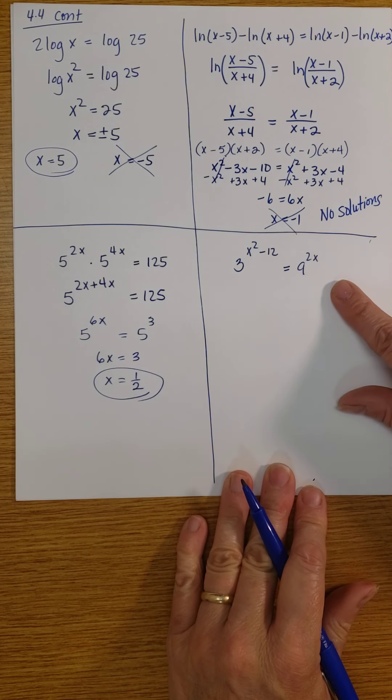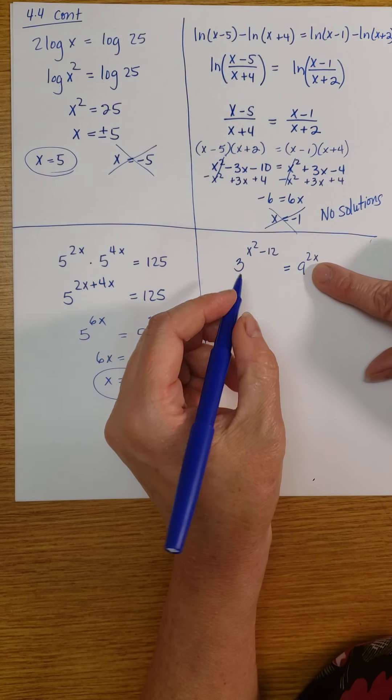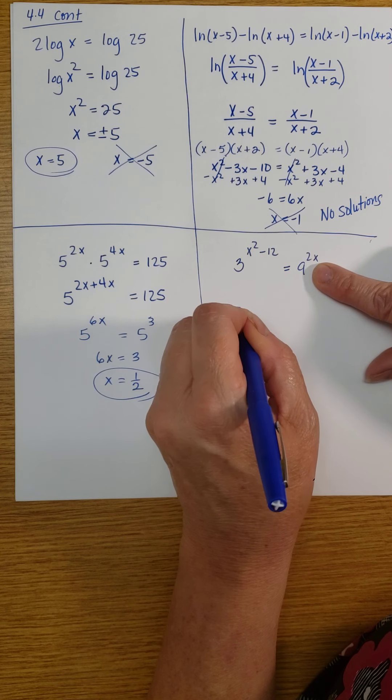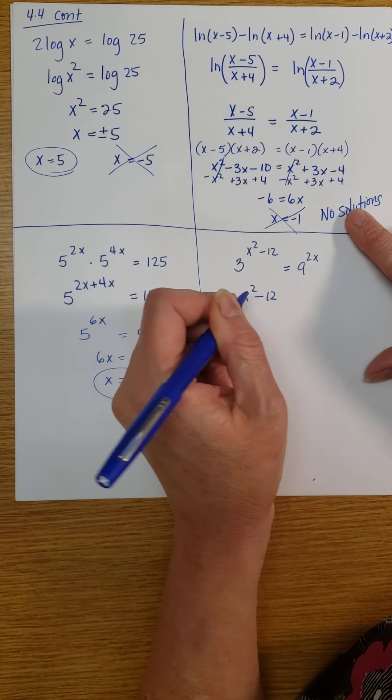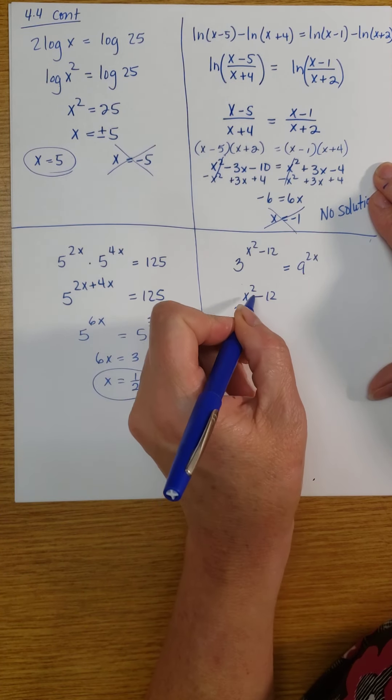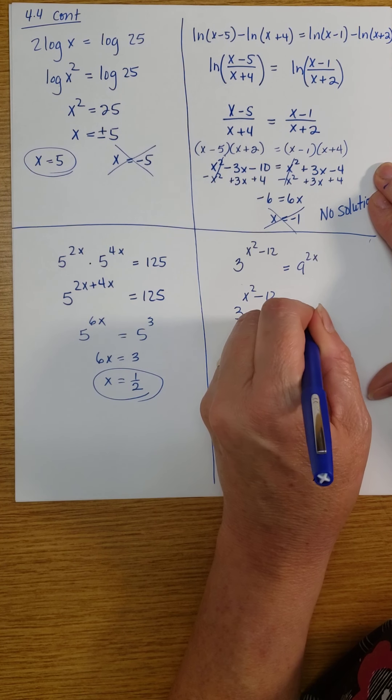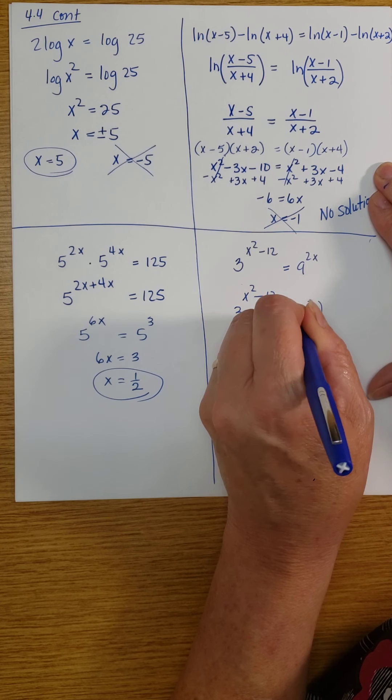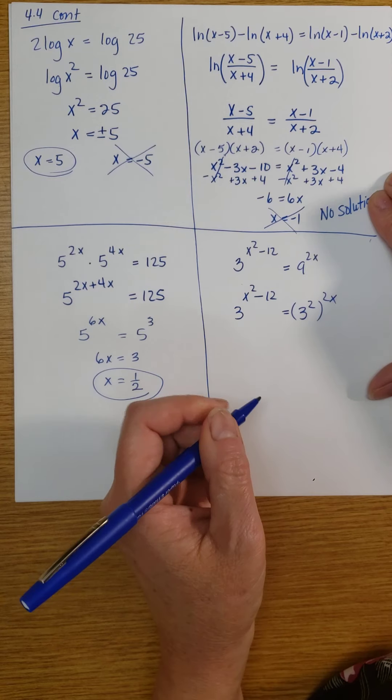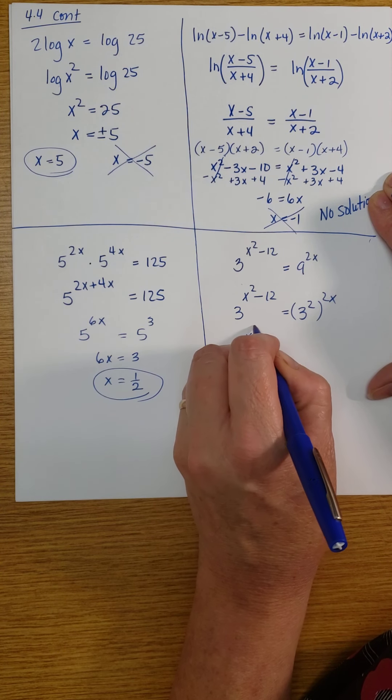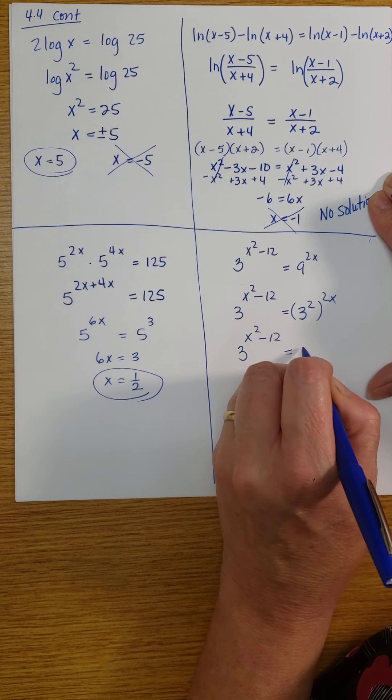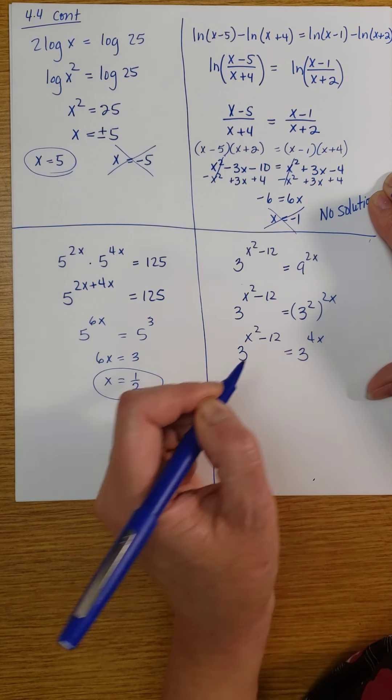And finally, I can write this 9 as 3 squared. So we have 3x squared minus... I'm sorry, 3 to the power of x squared minus 12 equals 3 squared to the power of 2x. Multiplying exponents, I get 3 to the power of x squared minus 12 equals 3 to the power of 4x.